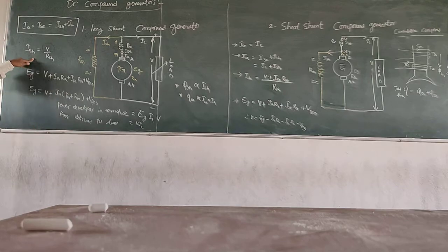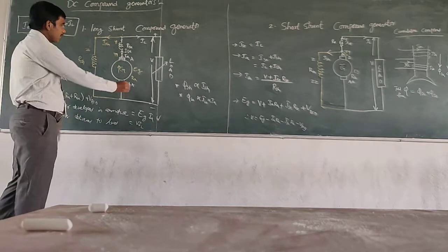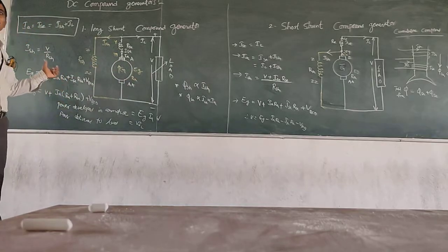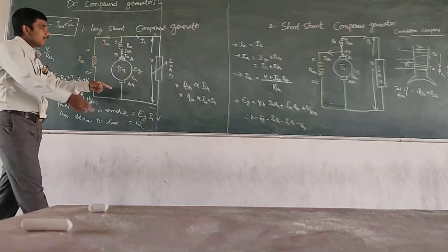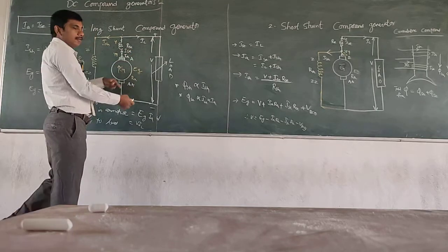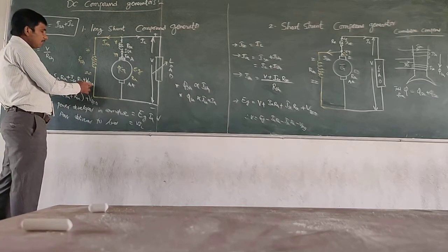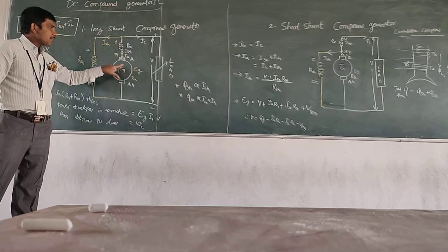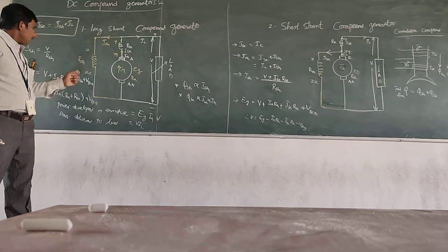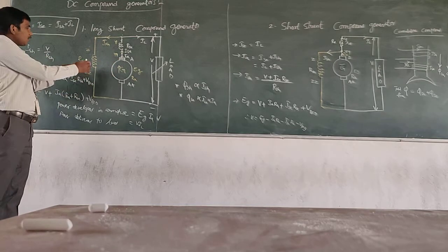Now, what is the generated voltage for the long shunt compound generator? By applying KVL we can get the generated voltage, or the voltage across the load. Eg equals V plus Ia·Ra plus Ia·Rsc plus Vbc — that is, voltage across the load plus armature resistance drop plus series field resistance drop plus brush contact drop.